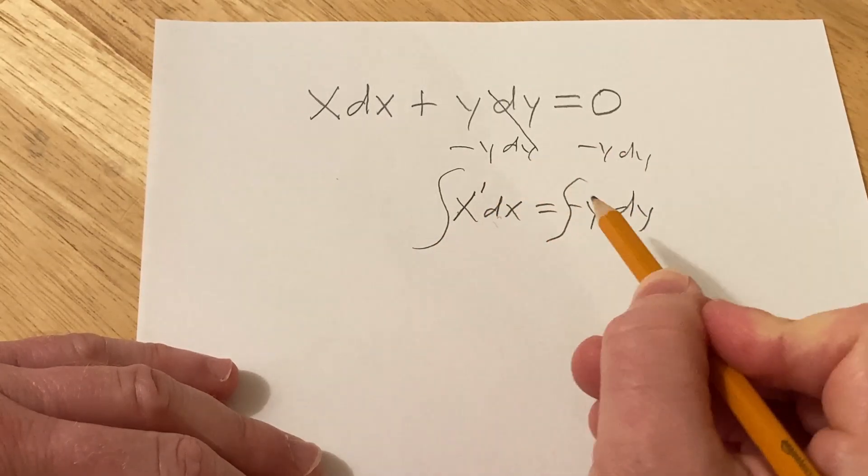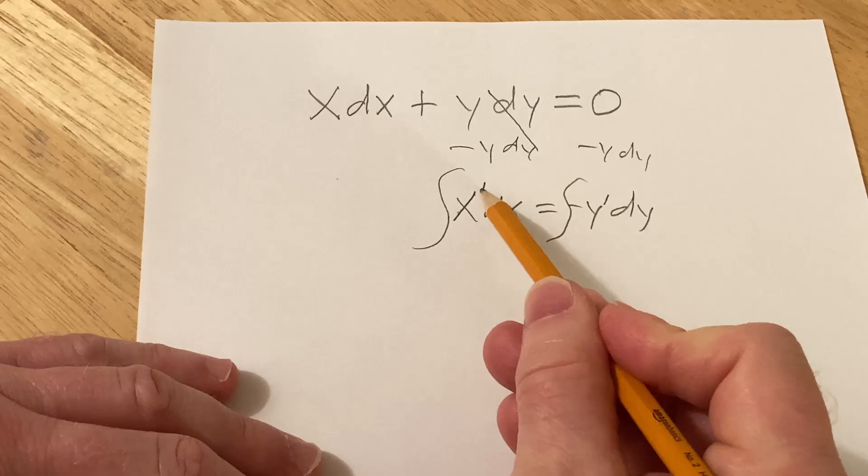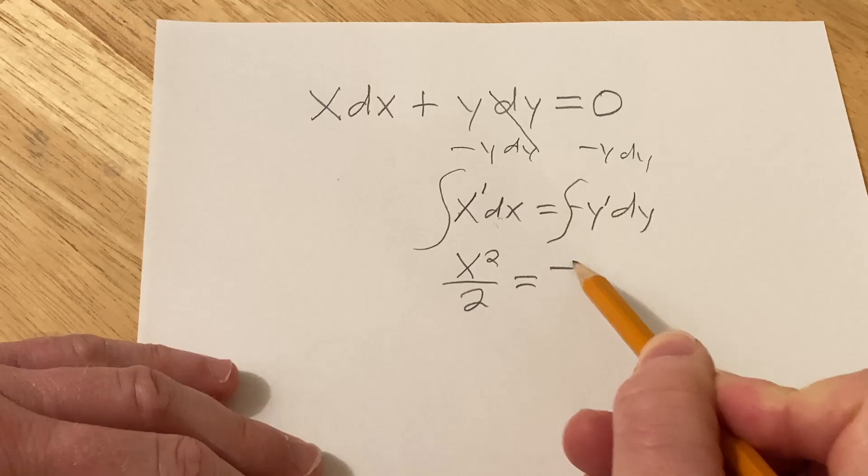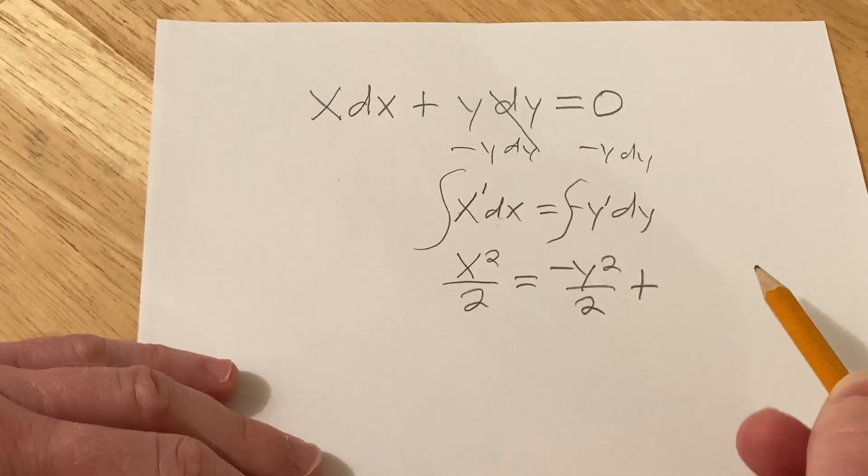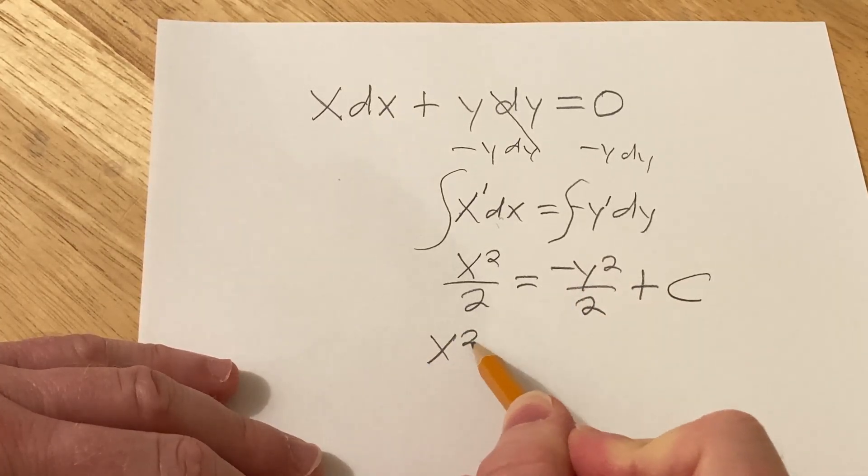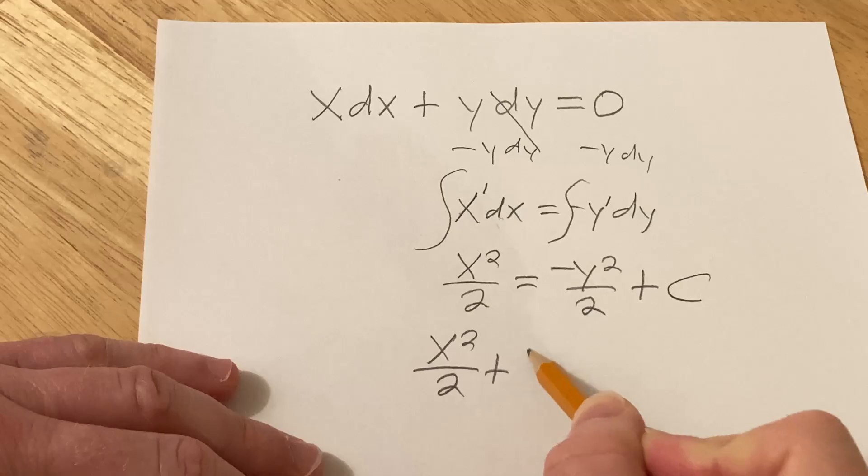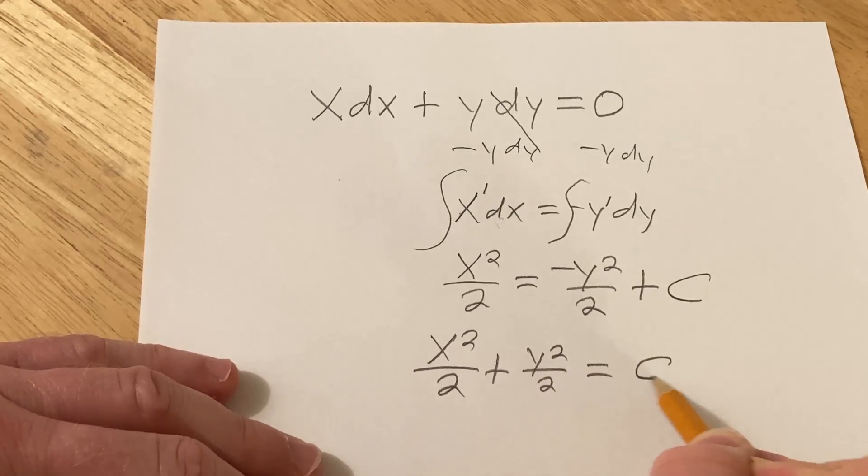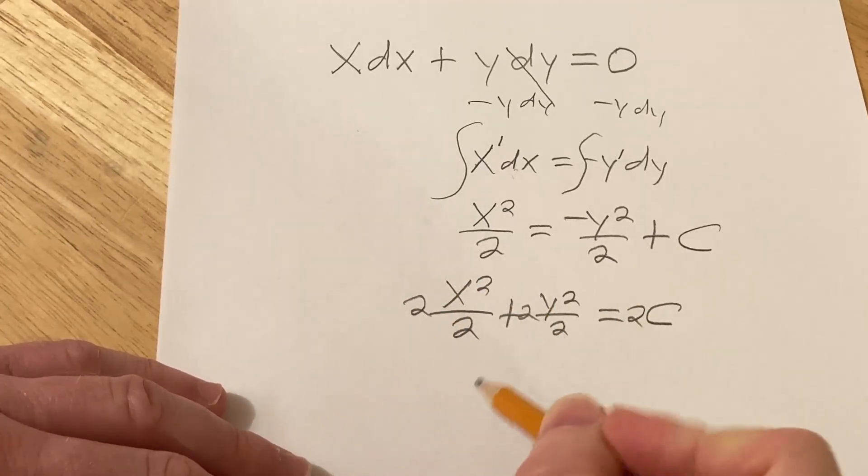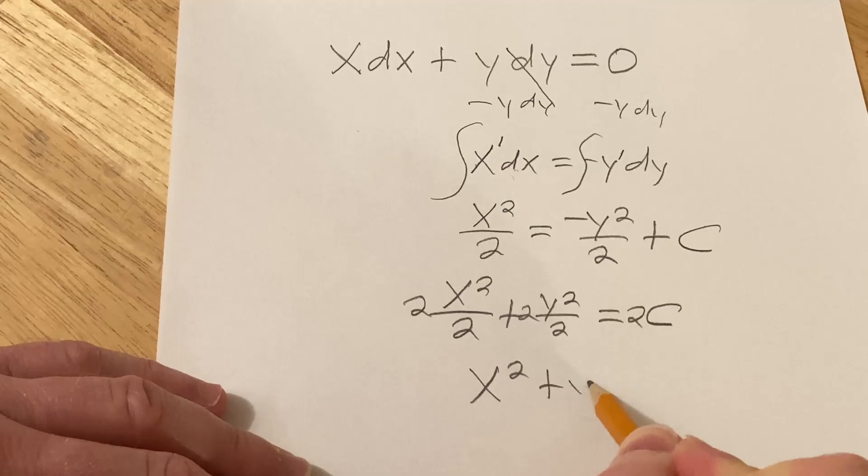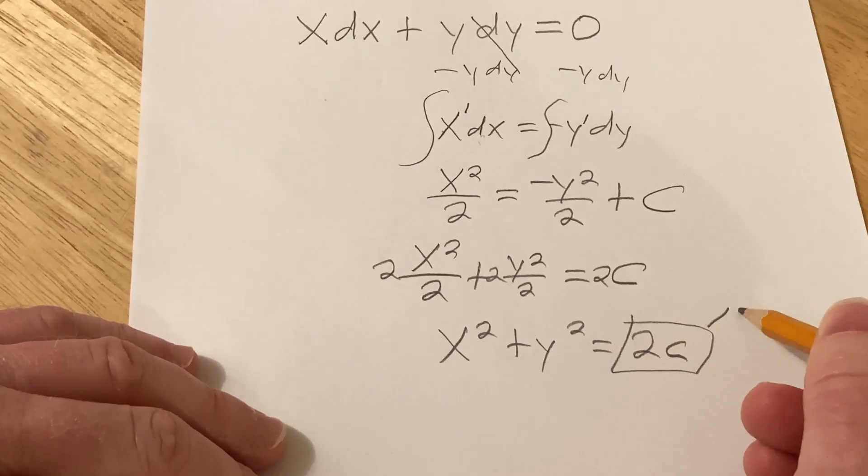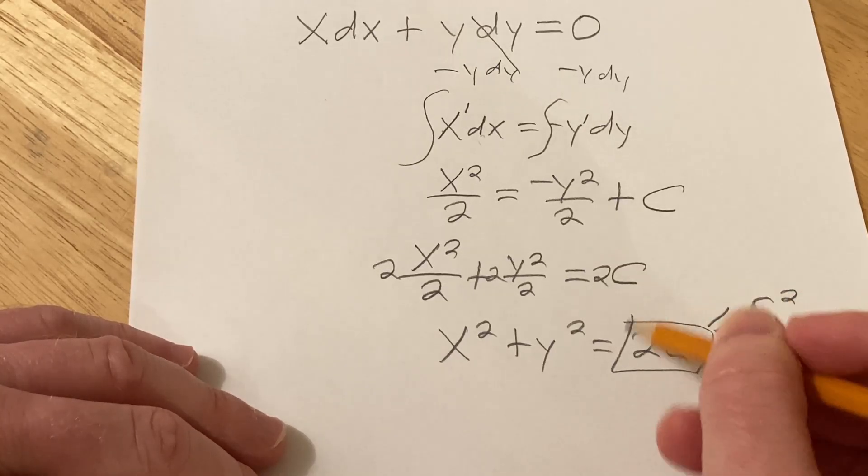Then you integrate. These are really easy integrals. You basically add 1 and divide by the result. Same thing here. Add 1 and divide by the result. Then you add your constant of integration, which is capital C. Then add this back to the other side. So we have x squared over 2 plus y squared over 2 equals C. Now what we're going to do is clear the fractions by multiplying by 2. So we have x squared plus y squared equals 2C. And now I'm going to take this and call it r squared.